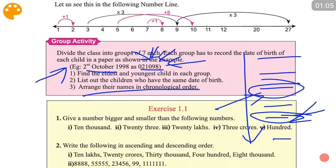And then arrange their names in chronological order. That means you have to find the person who was born 1st, then who was born 2nd, who was born 3rd, and who was born latest. The youngest person should come as the 7th.